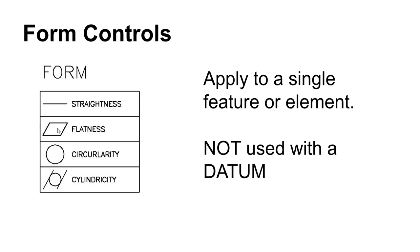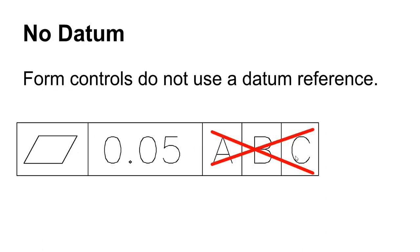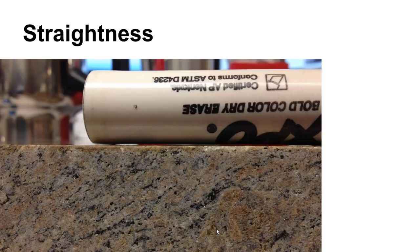The simplest group of geometric controls are the form controls: straightness, flatness, circularity, and cylindricity. Form relates to the shape of the part itself and is not relative to anything else — a surface is either flat or it's not, regardless of what adjacent or opposing surfaces may be. If you see datums attached to any of these form controls, something is wrong. For example, a dry erase marker on a surface plate shows some daylight underneath it — it is not a straight part, though no truly straight part exists.